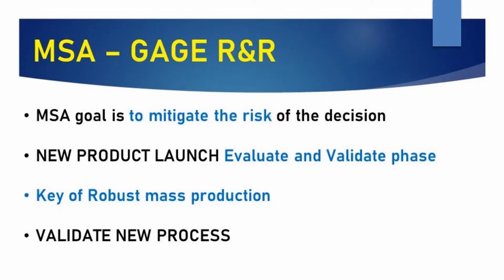The Gauge R&R goal — the main goal — is to mitigate the risk of making a wrong decision. When we are about to launch a new product, all the new measurements and equipment need to be evaluated with the Gauge R&R. We need to have a good Gauge R&R number for production because that is what will give us robustness in our process and validate our measurement system.